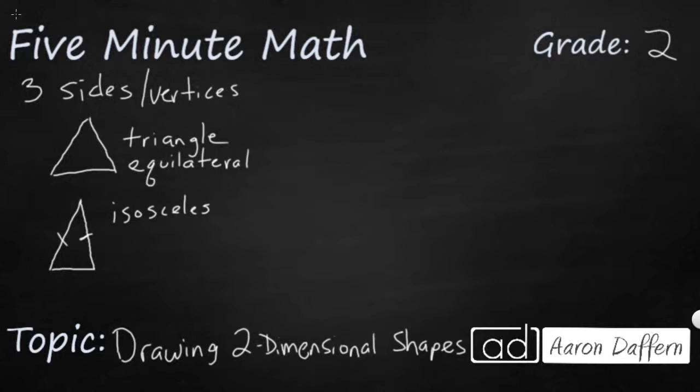So an isosceles triangle only has two sides the same. And then sometimes you'll just get a really kind of strange triangle that just doesn't look like any of the sides match, and that's called a scalene. It means none of the sides are the same length. None of the angles inside are the same either.